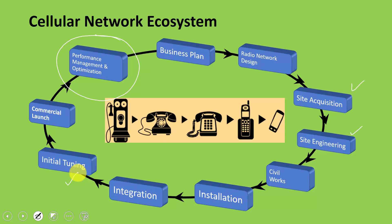Initial tuning takes place when the network is being deployed, and optimization takes place once the network has been launched — it keeps on happening throughout the life of the network. There may be certain things which are similar in initial tuning and optimization, but optimization is much bigger compared to initial tuning.